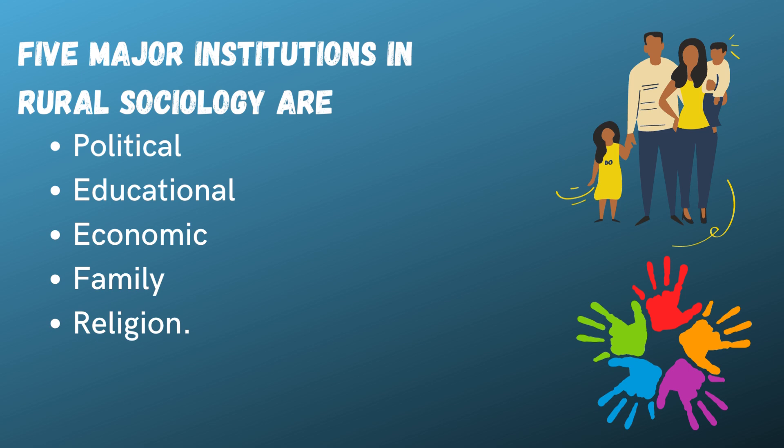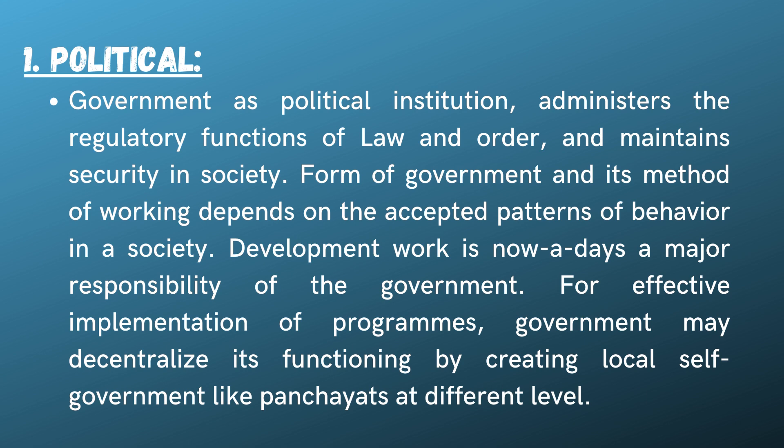Five major institutions in rural sociology are: Political, Educational, Economic, Family, and Religion.